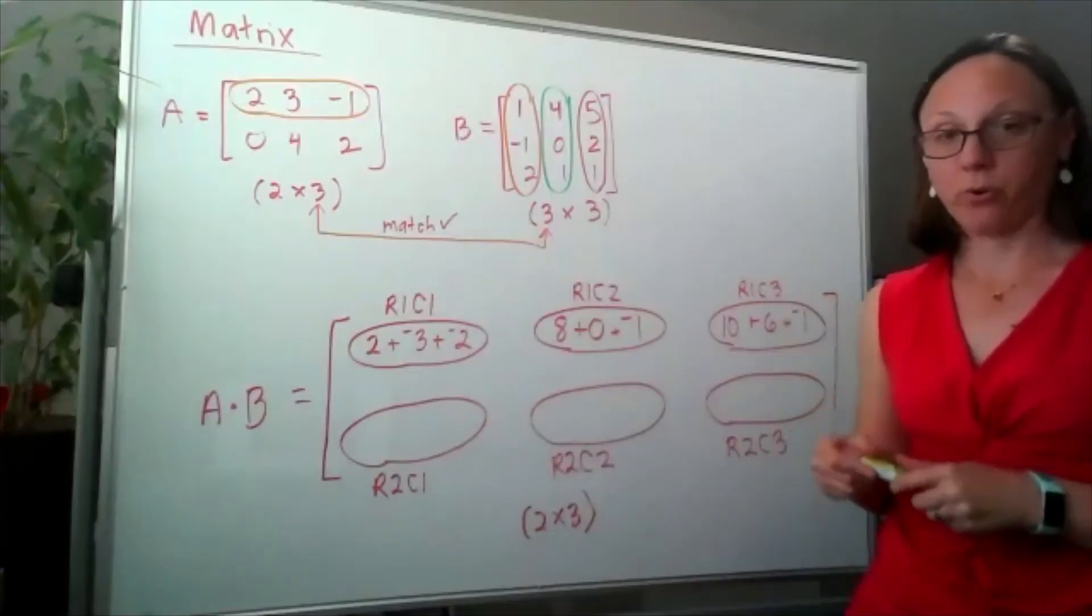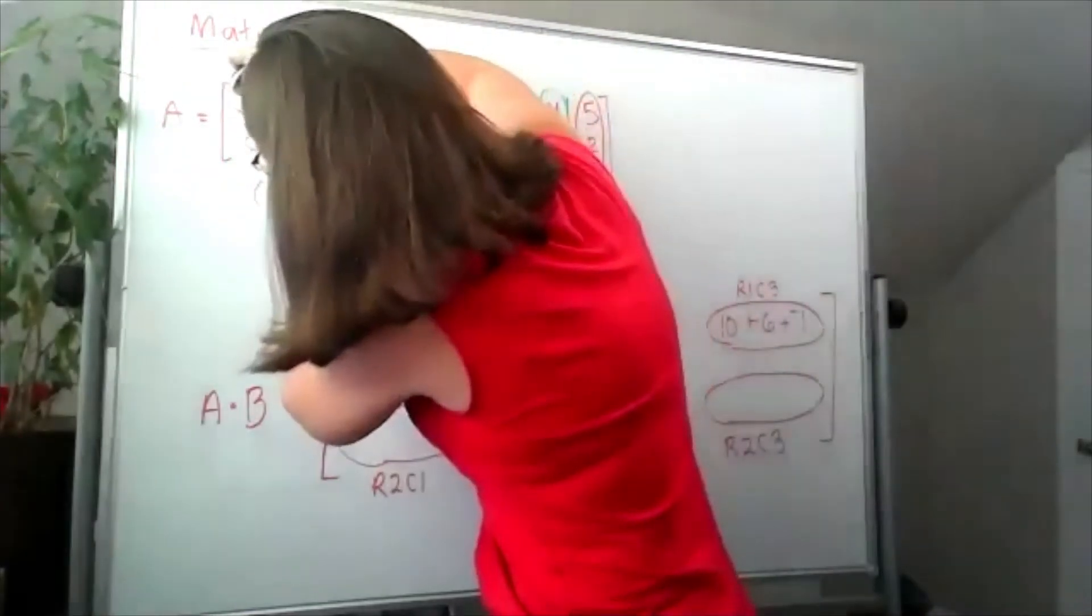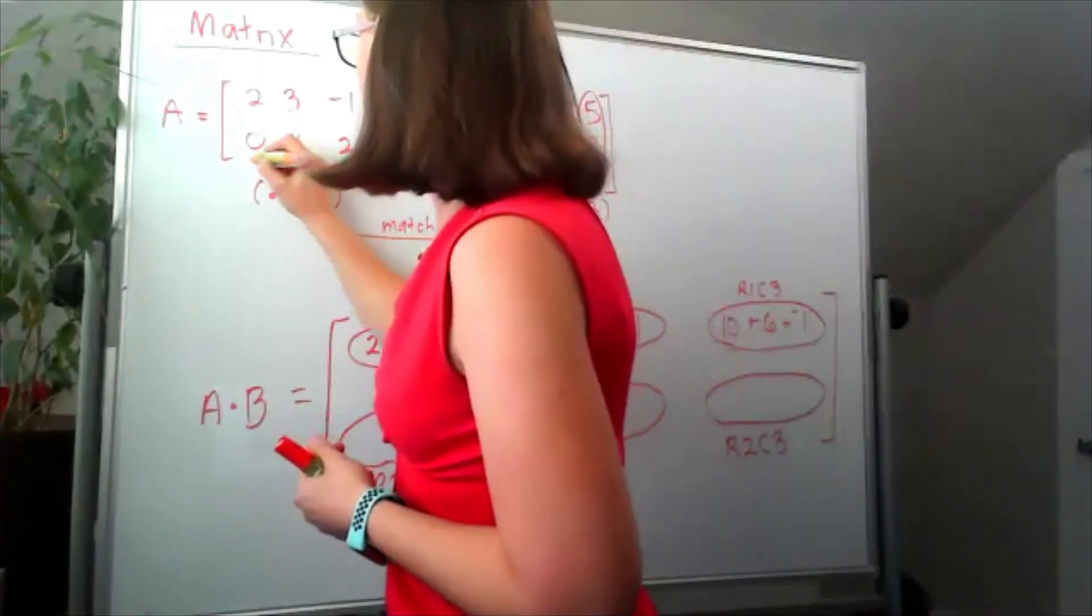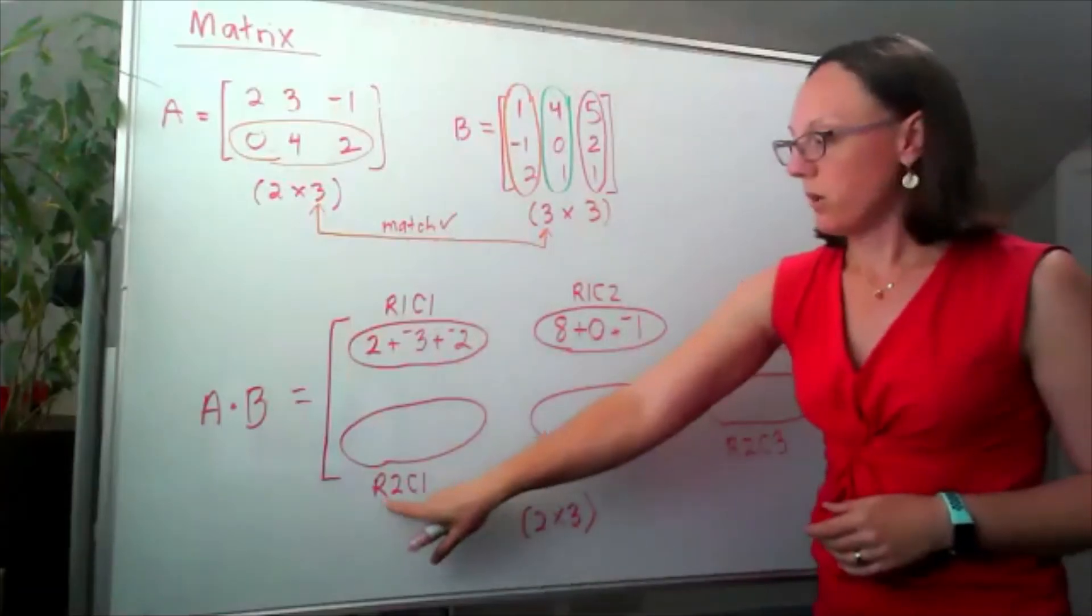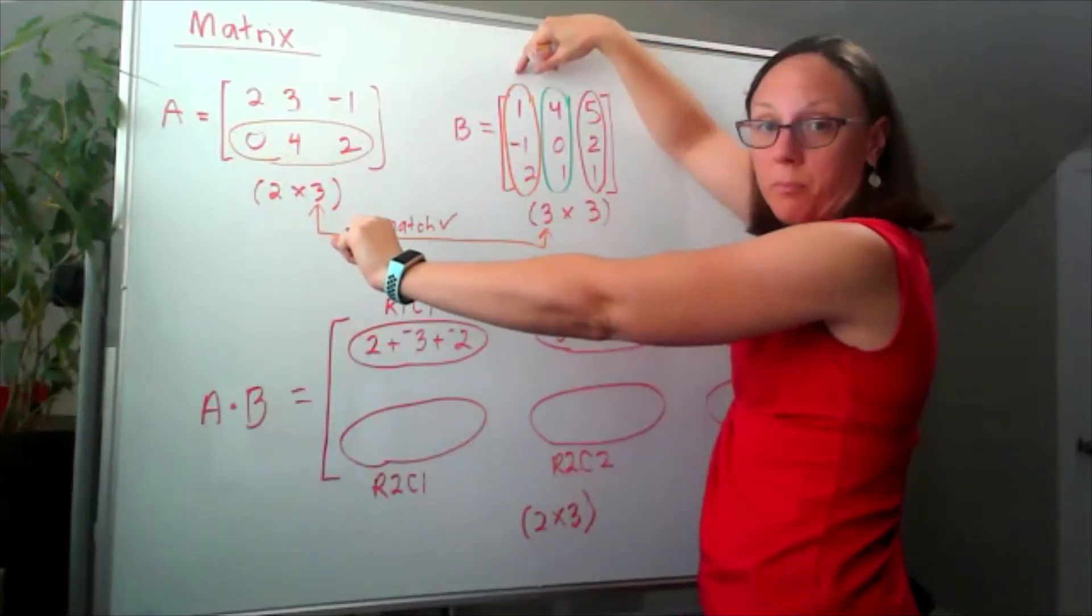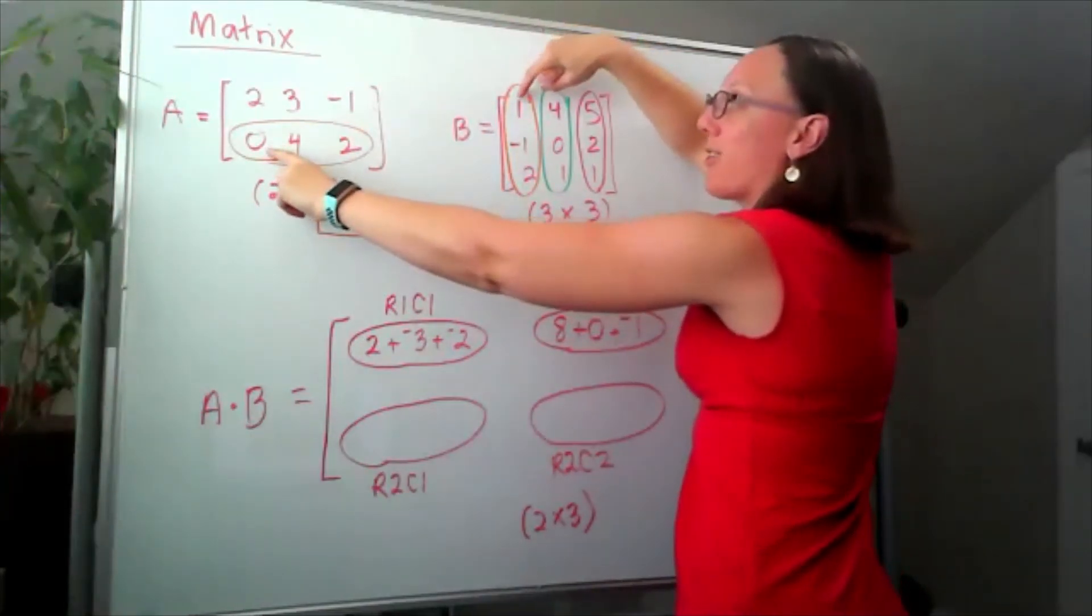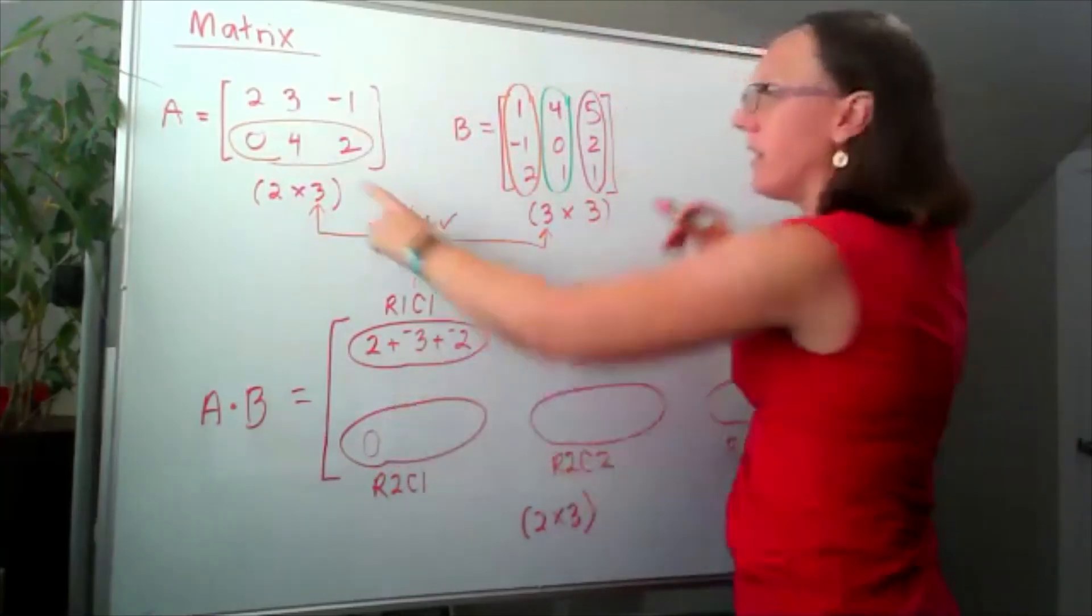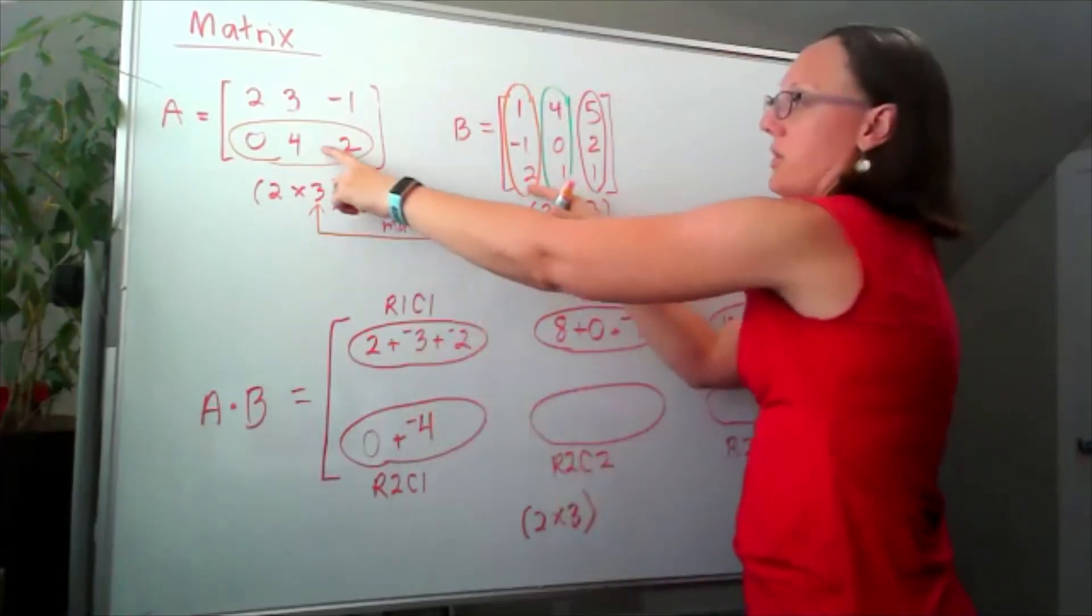Now it's time to move to multiplying through our second row. Okay, so now our focus is on the second row. So row 2 times column 1. Row 2 over here, column 1 over here. I'm going to maybe do the arithmetic in my head. Now that's too dangerous. I'm going to write it out. 0 times 1, so I've got 0, 4 times negative 1, and 2 times 2.